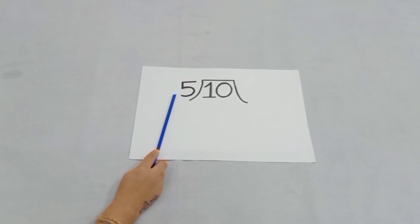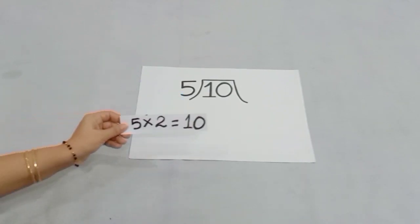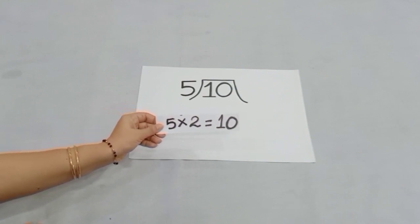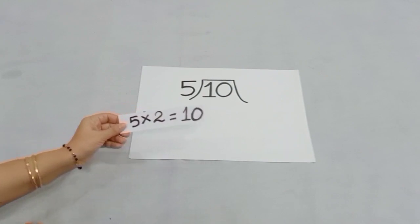So we will decide the table of five up to two digits. And we know in the table of five, five twos are ten. So we will write it like this: five twos are ten.